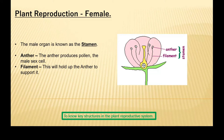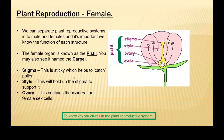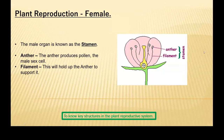So, let's quickly recap. The pollen is the male sex cell, which is produced by the anther. And the ovules, which is the female sex cell. Also in the male is the filament, and this will hold up the anther to support it.